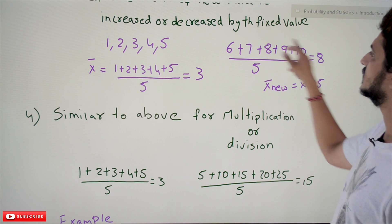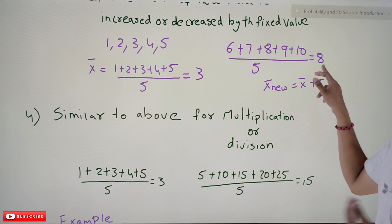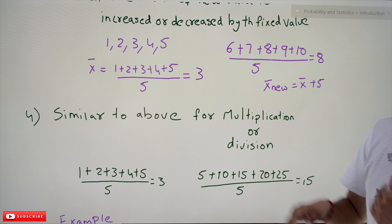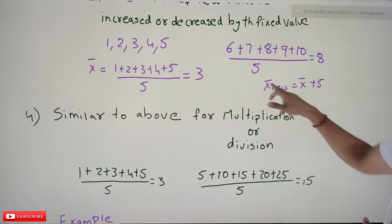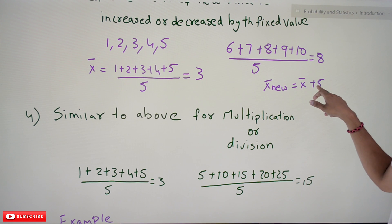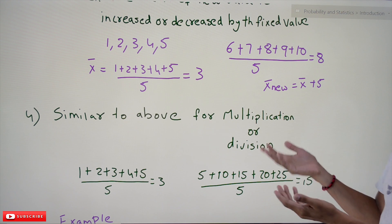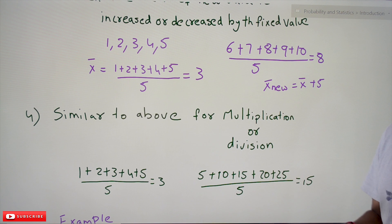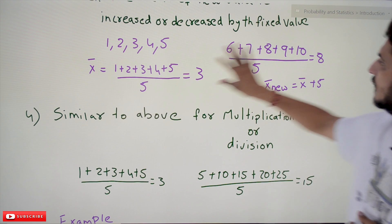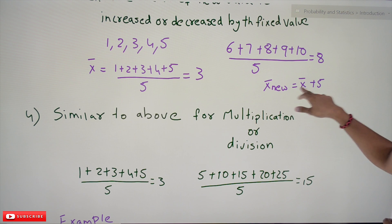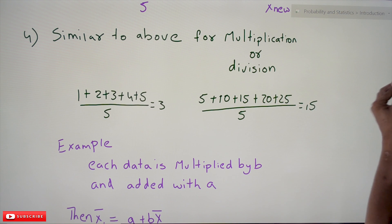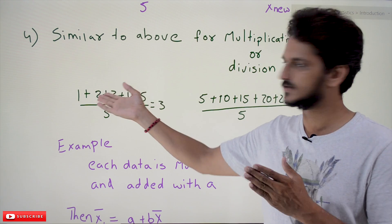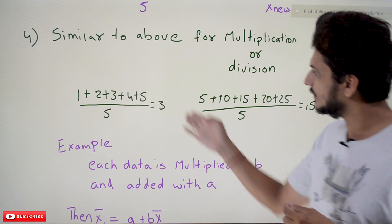Adding 5 to each: 6, 7, 8, 9, 10 — the new mean is 8, which is 3 + 5. If you subtract: 3 − 5 = −2. So x̄_new = x̄ + fixed value (for addition), or x̄ − fixed value (for subtraction). This same rule applies to multiplication and division — if all numbers are multiplied by a fixed number, the mean is also multiplied by that number.